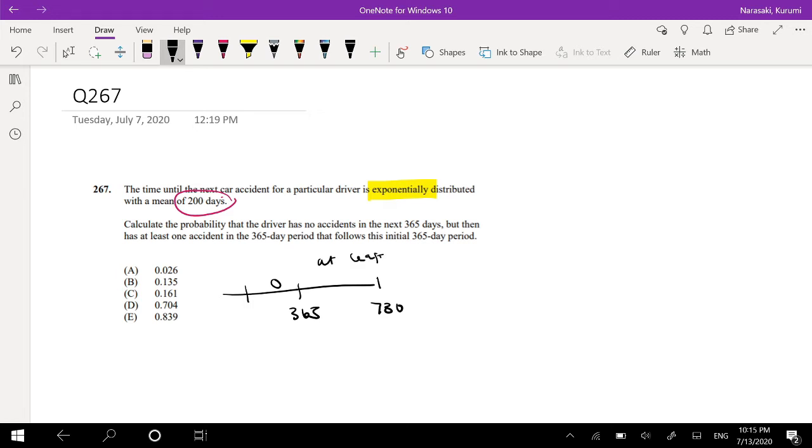So this is actually equivalent to saying the next accident, what is the probability that the next accident happens between 365 and 730.